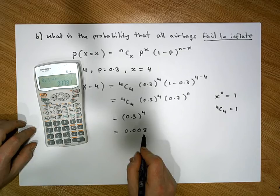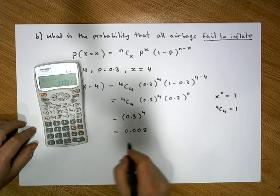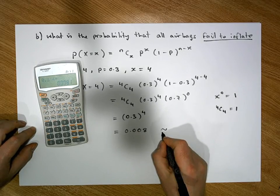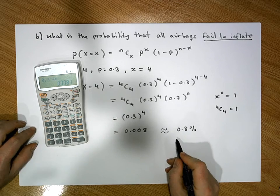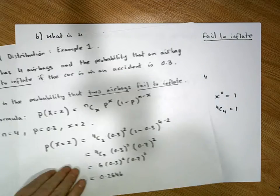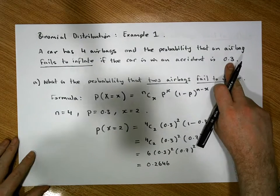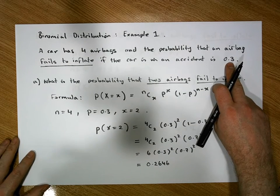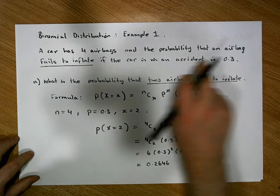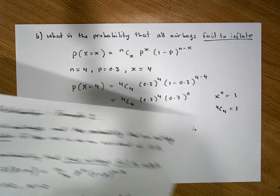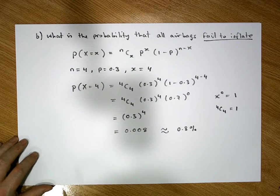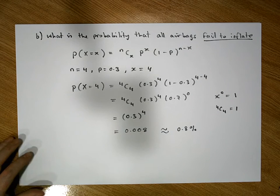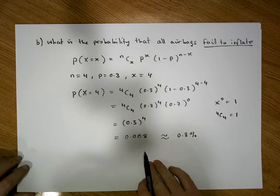So multiplying by 100, we get 0.8%, which means that if the probability of any airbag failing to inflate is 0.3 — a 30% likelihood — then the probability that all of the airbags fail to inflate is less than one percent.